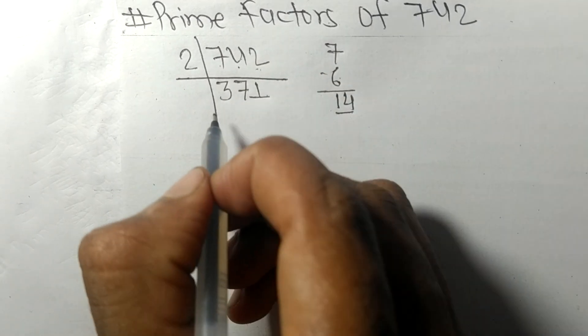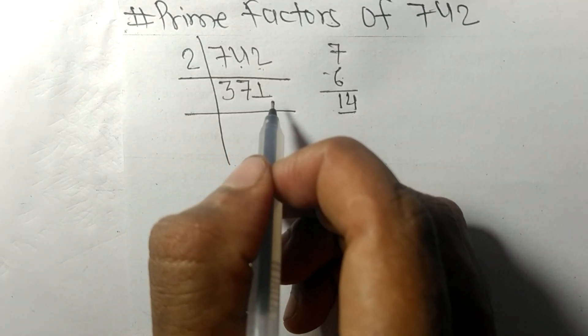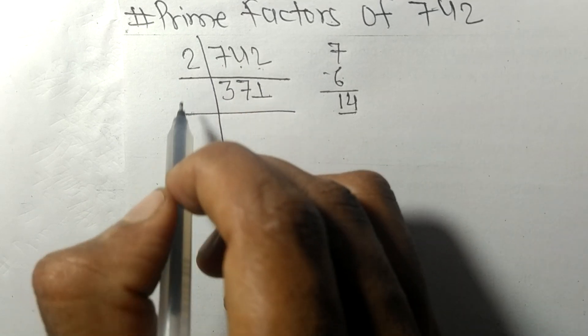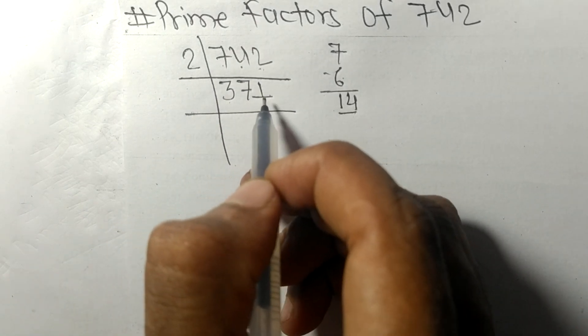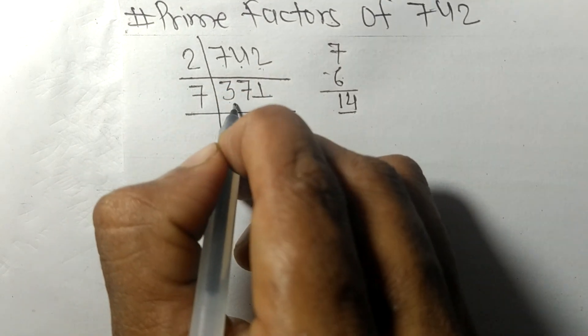So now we got 371 on dividing 742 by 2. 371 is exactly divisible by 7.